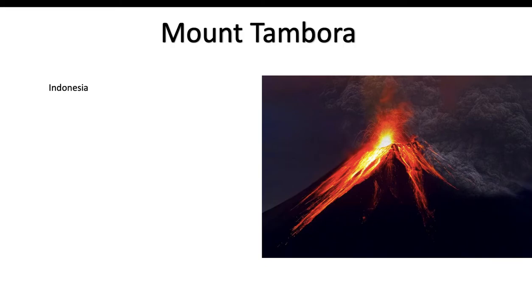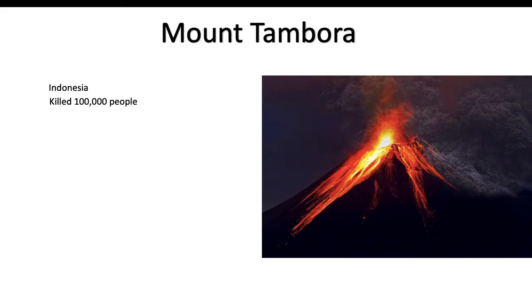Mount Tambora killed 100,000 people. It erupted so much ash that the sky became hazy, and when summer arrived the sun couldn't shine its rays toward the earth. That caused crops not to grow, and lots of other problems followed because of that.